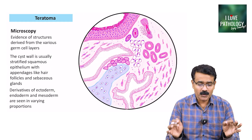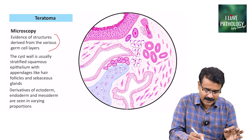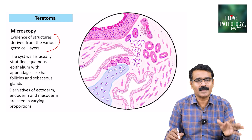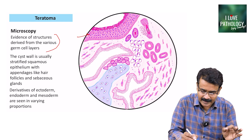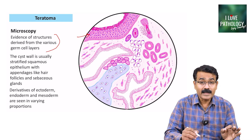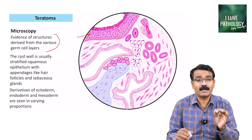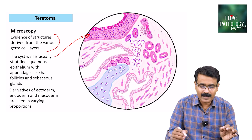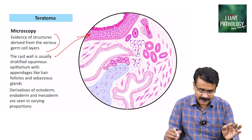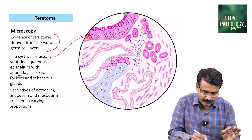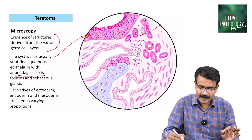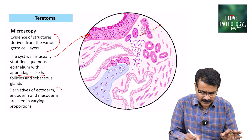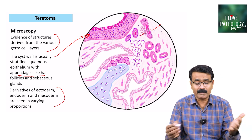Microscopically, you need to observe evidence of structures derived from the germ cell layers. The most common structure you can see is the skin and its adnexa. In a benign cystic or mature cystic teratoma, you will find the cyst wall usually lined by stratified squamous epithelium, along with appendages like hair follicles and sebaceous units. You can also find derivatives of ectoderm, endoderm, and mesoderm in varying proportions.